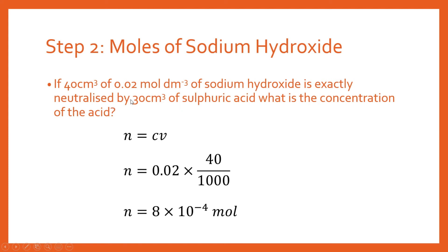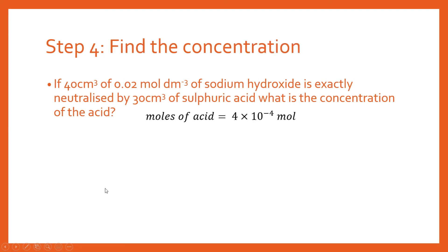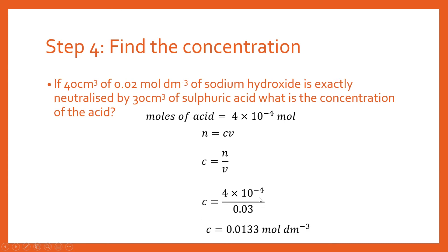We know that's exactly neutralized by 30 cm³ of sulfuric acid. The next step is to work out how many moles of acid we must have — this is the important bit to deal with the diprotic nature. We've got a one-to-two ratio, so we're going to have to halve the moles of sodium hydroxide to get the moles of acid, because two moles of NaOH react with one mole of H₂SO₄. We've now got our moles of acid, so we use n = cv, rearrange for concentration, substitute in what we know, and divide the volume by 1000 to get it into dm³.